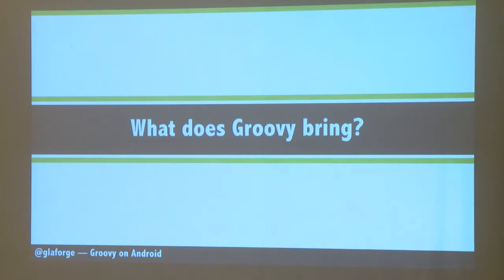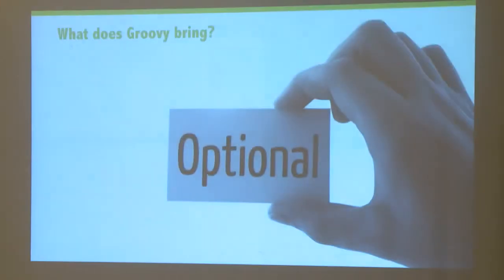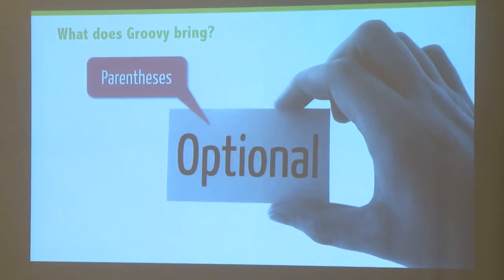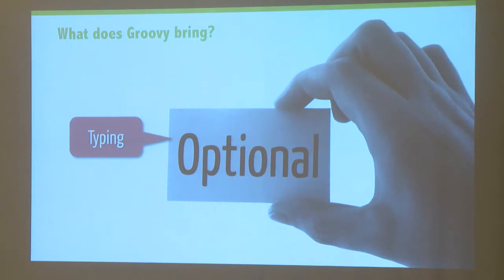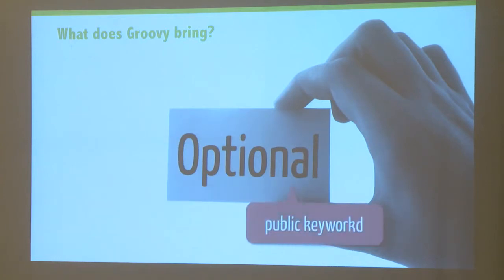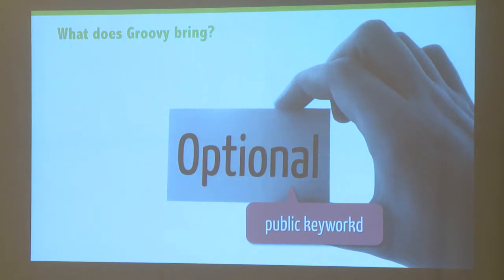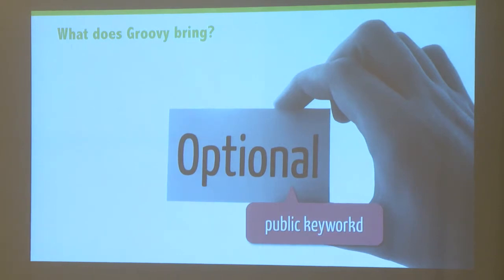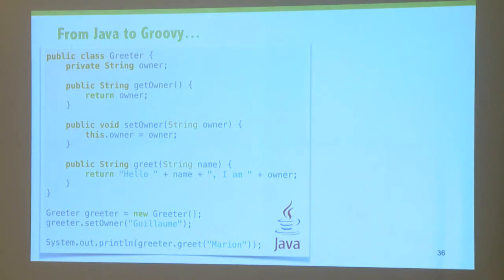So what does Groovy bring on top of Java? There are many things which are optional. You can use semicolons but you can get rid of them. You can remove lots of parentheses. You can use optional typing — instead of repeating types all the time, you can just say def name equals some string. The return keyword and public keyword are also optional, because the last expression evaluated is returned by default. And methods or classes are actually public by default, though you can still use private, protected, etc. So more concretely, let's say you have a POJO — a Greeter class with an owner property with a getter and setter, a greet method with a message. Then you instantiate it, call the setter, and print the output.